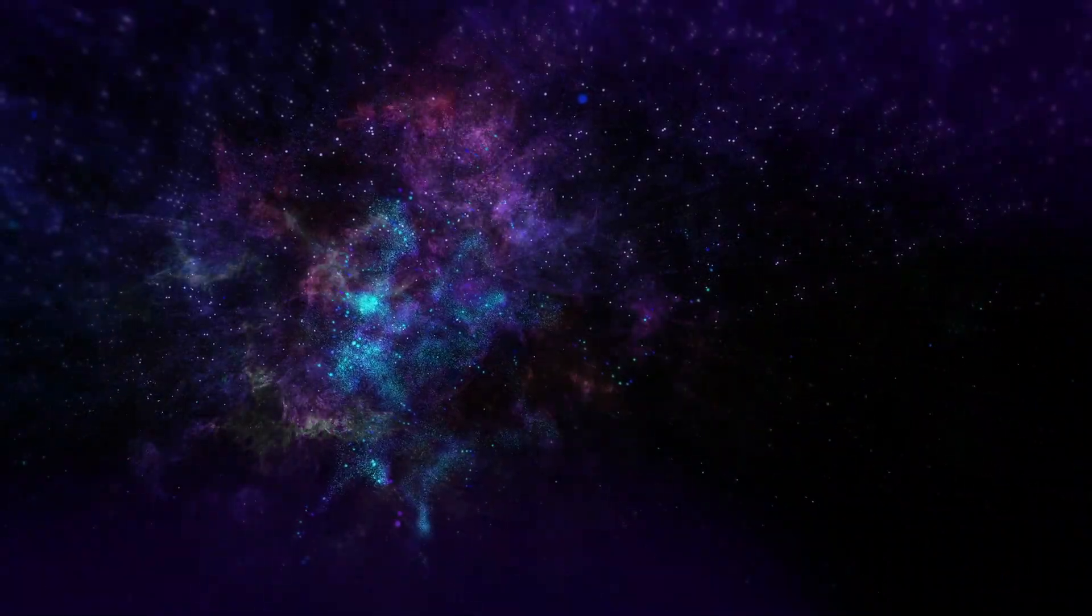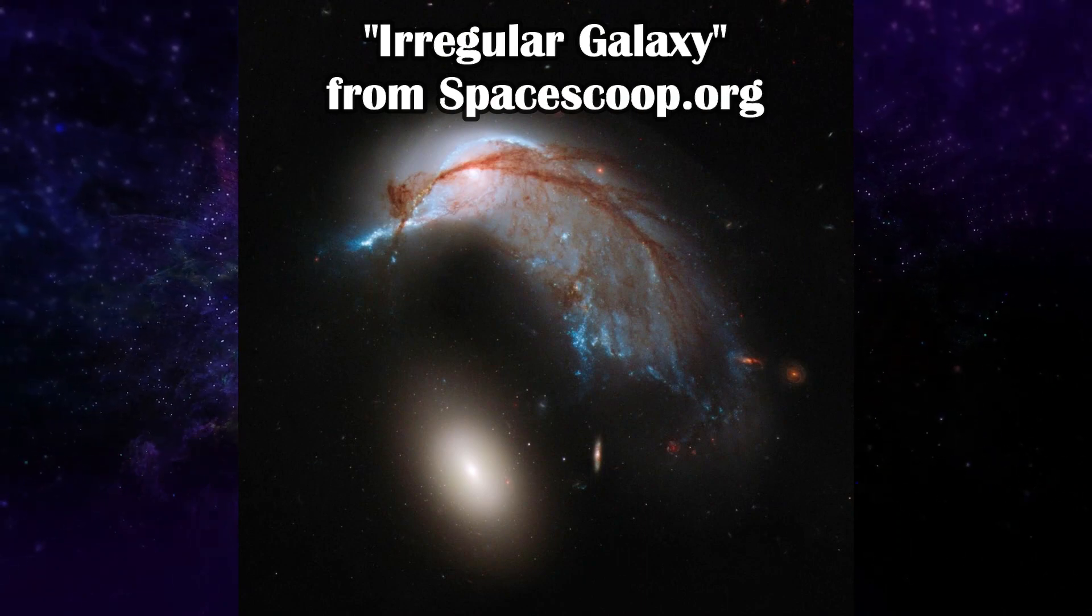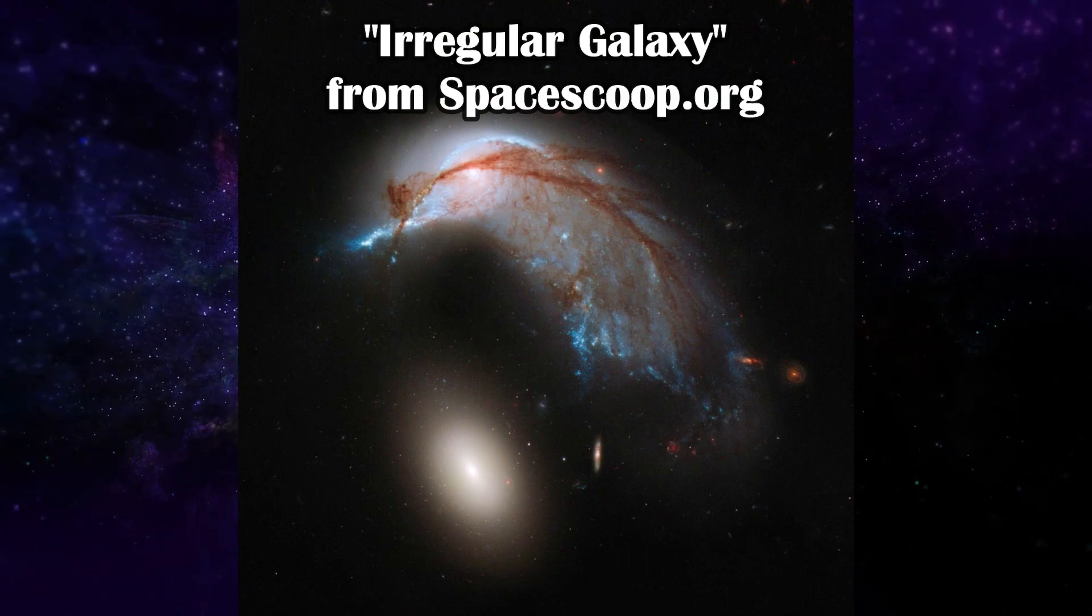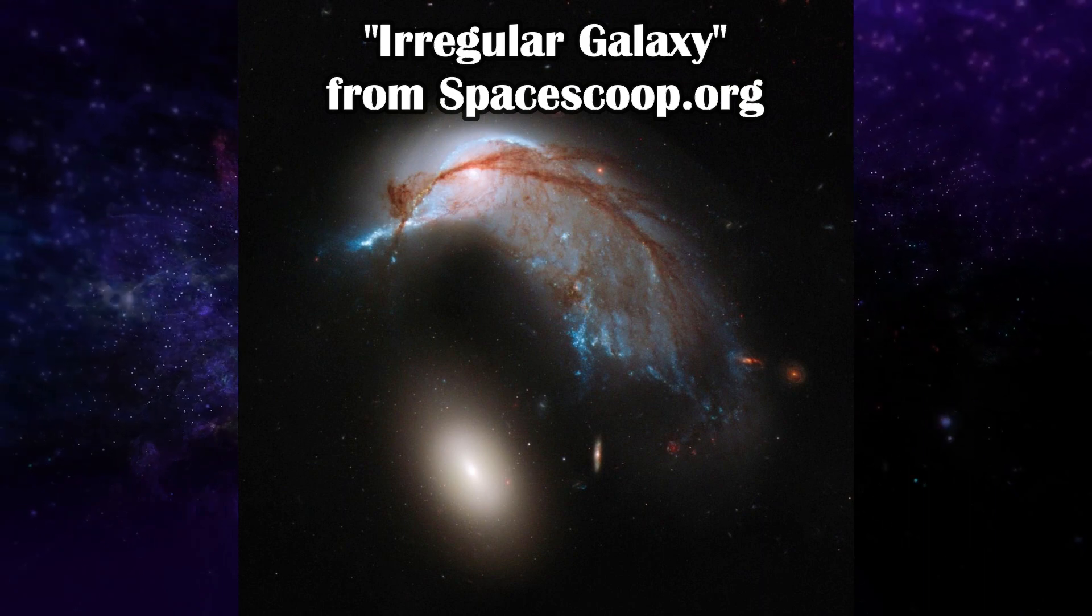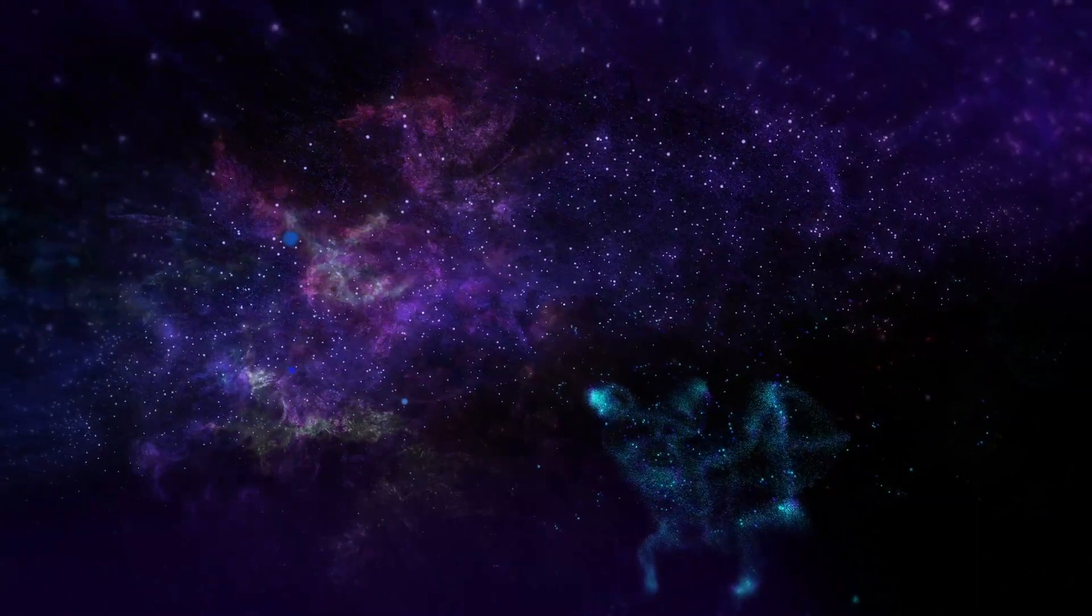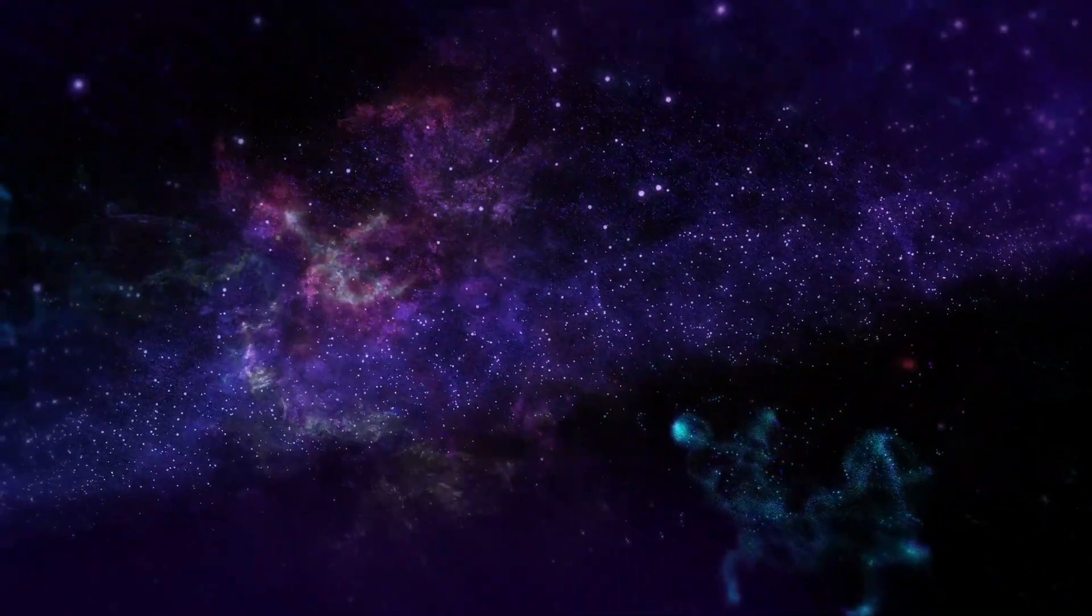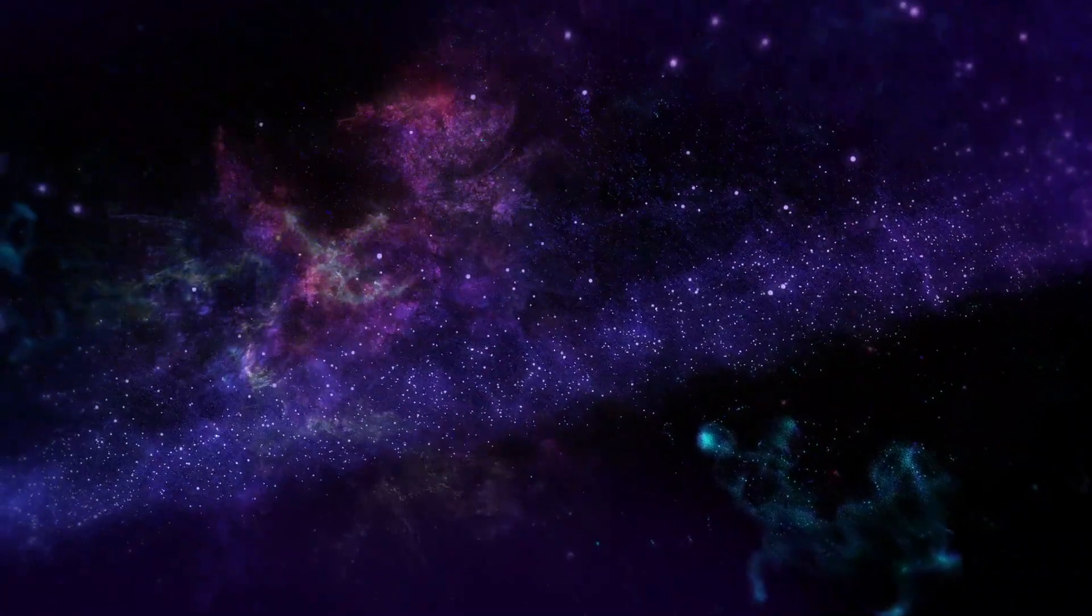The last galactic shape is called irregular, and is considered to be the miscellaneous group of galaxies. Holding shapes that are hard to define, it is suspected that these galaxies are being forced into irregular shapes, such as needle-like, rings, and cloud-shaped, due to the gravity of other nearby galaxies tugging on them.